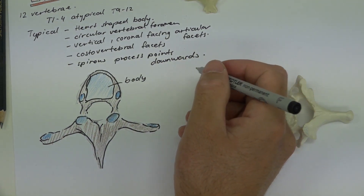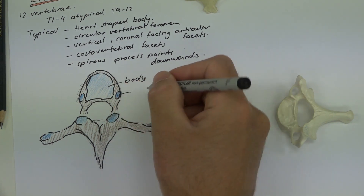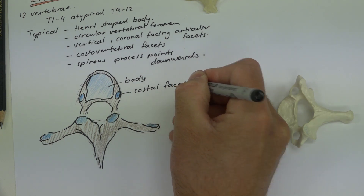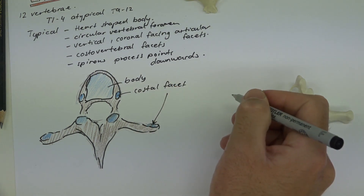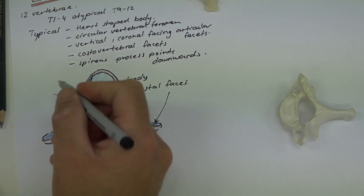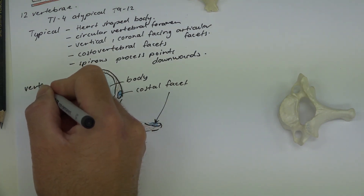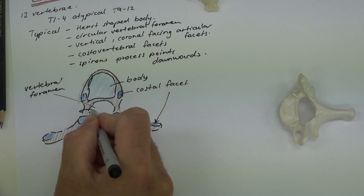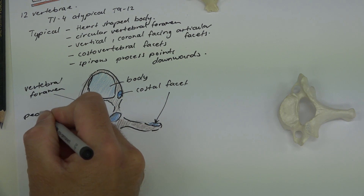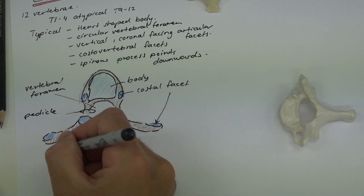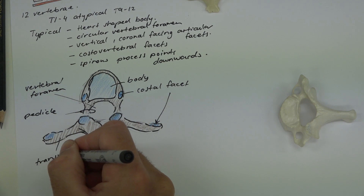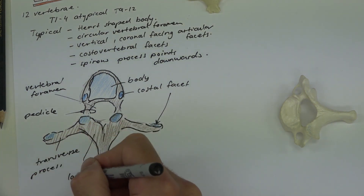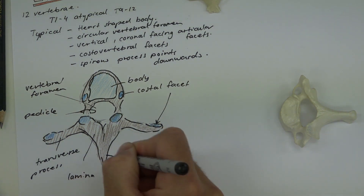Let's label this: here we have the heart-shaped body, specifically the costal facets on the vertebral body, the vertebral foramen, the pedicle, the transverse process, the lamina, the spinous process, and the superior articular facet.